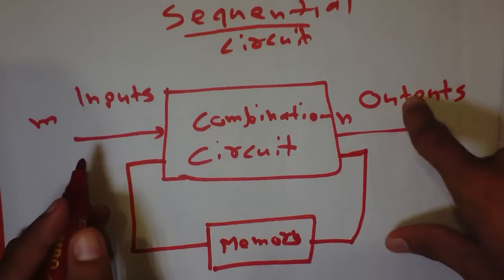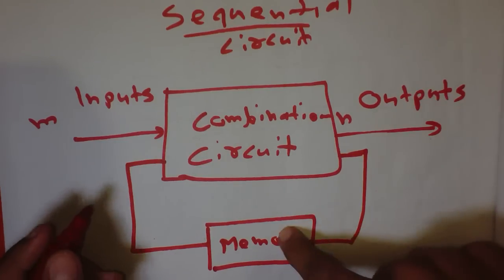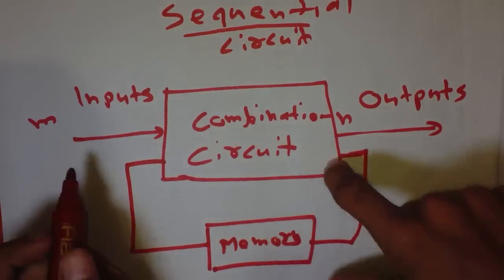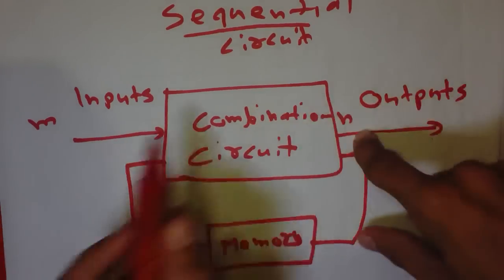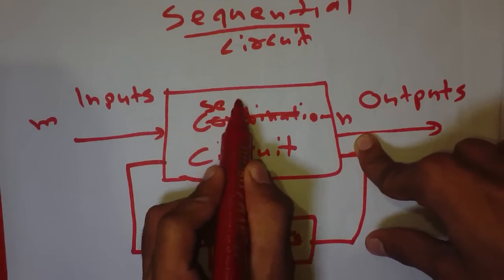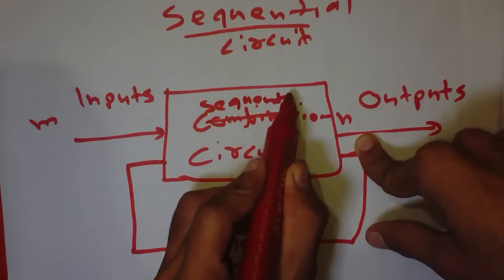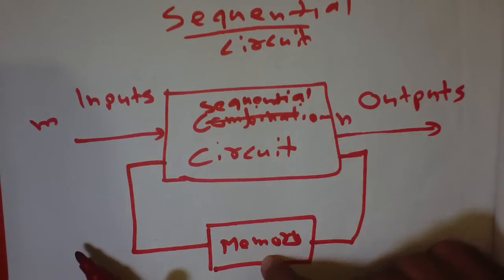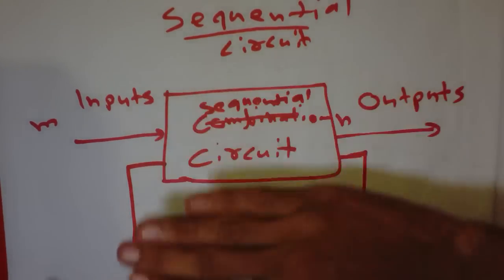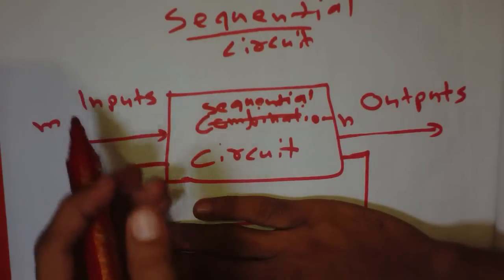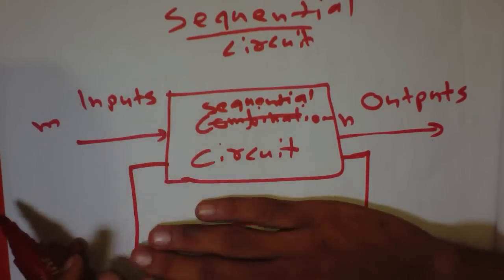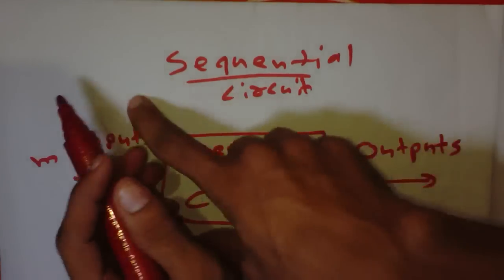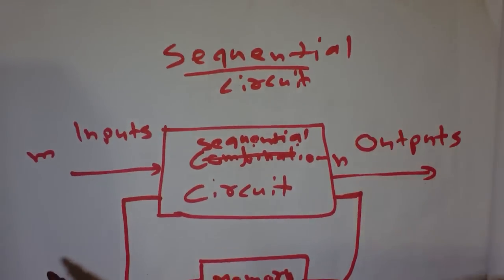The output of a sequential circuit depends on the inputs and also on the memory element. So a sequential circuit has a special memory element, whereas a combinational circuit only depends on the combination of input values. This is the key difference between sequential and combinational circuits. A flip-flop is a type of sequential circuit.